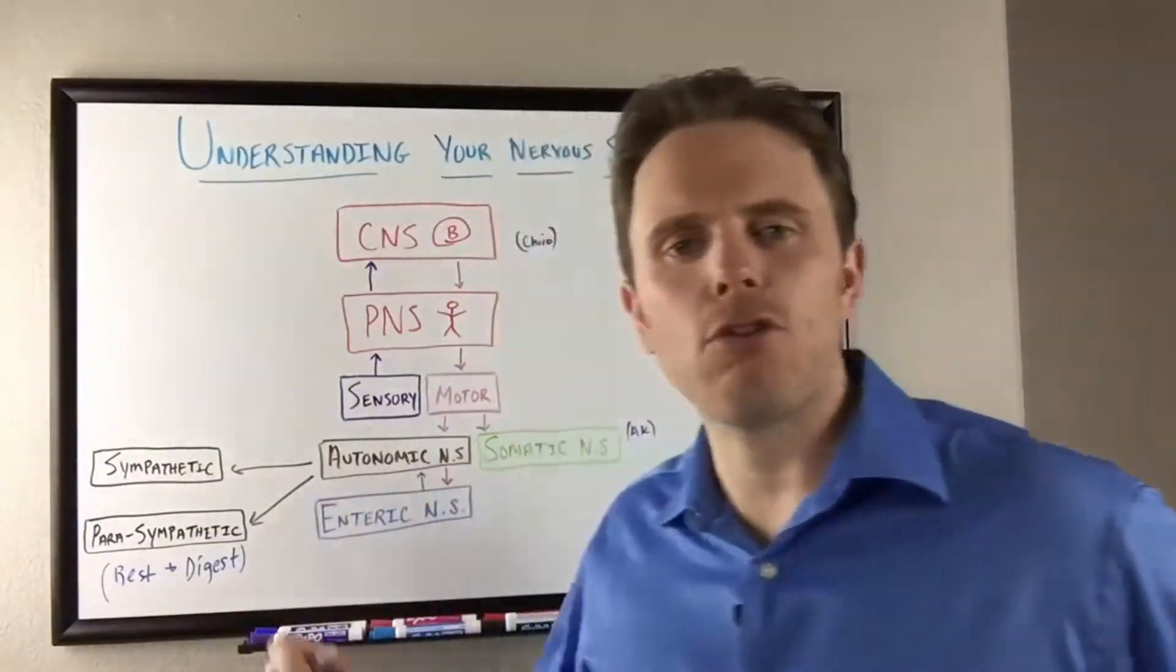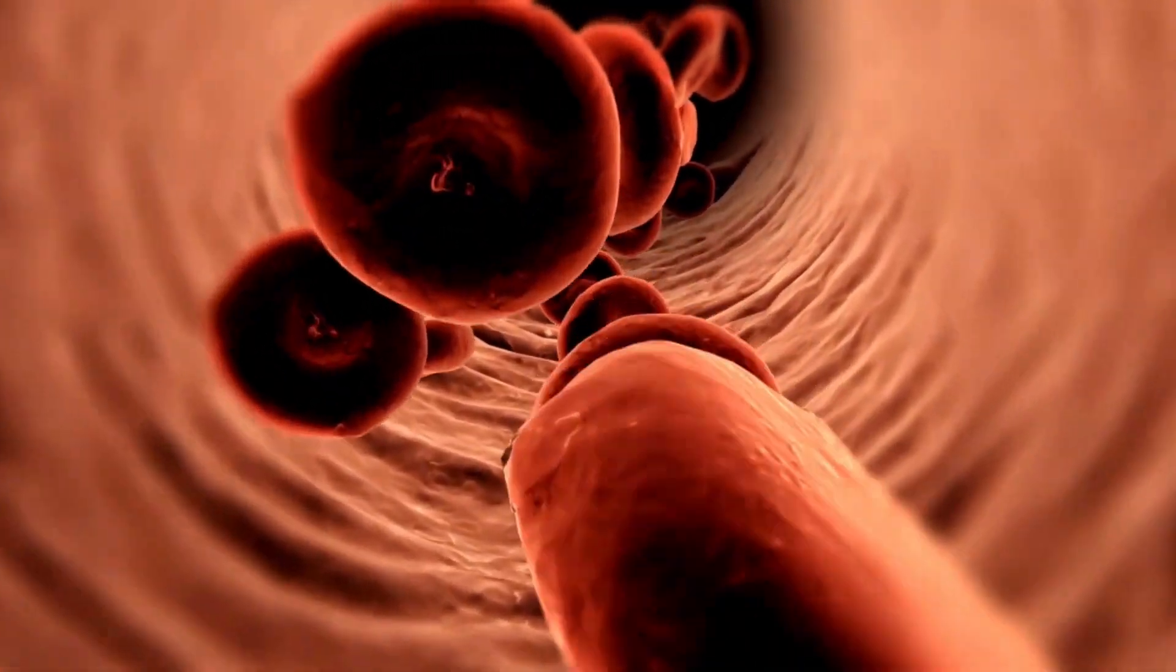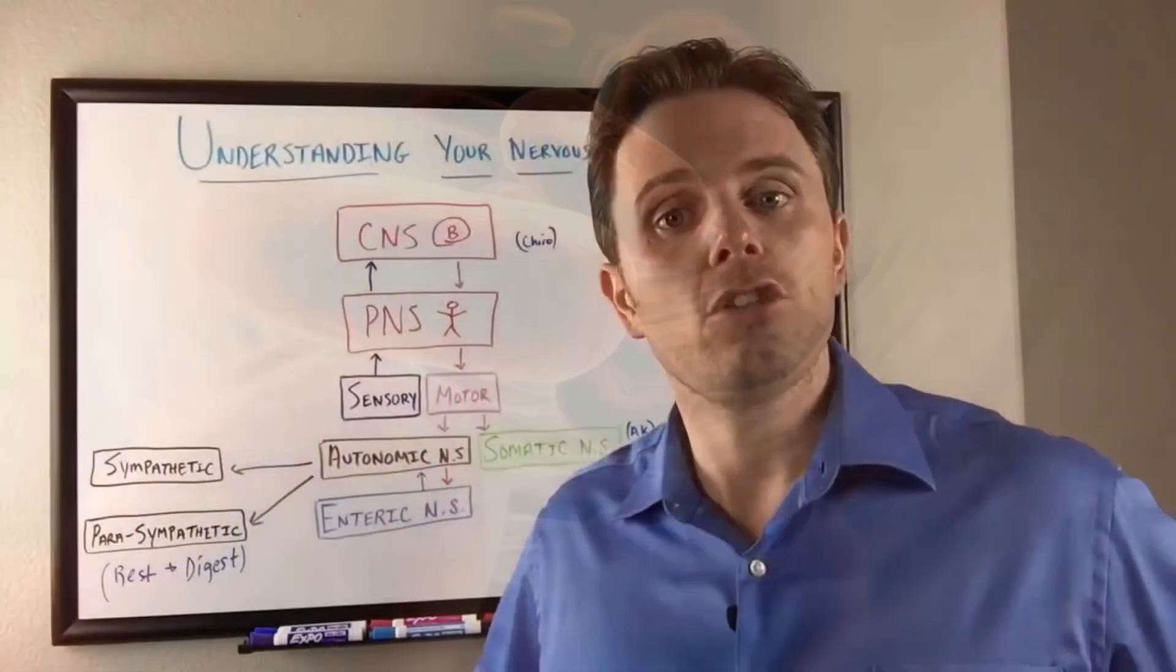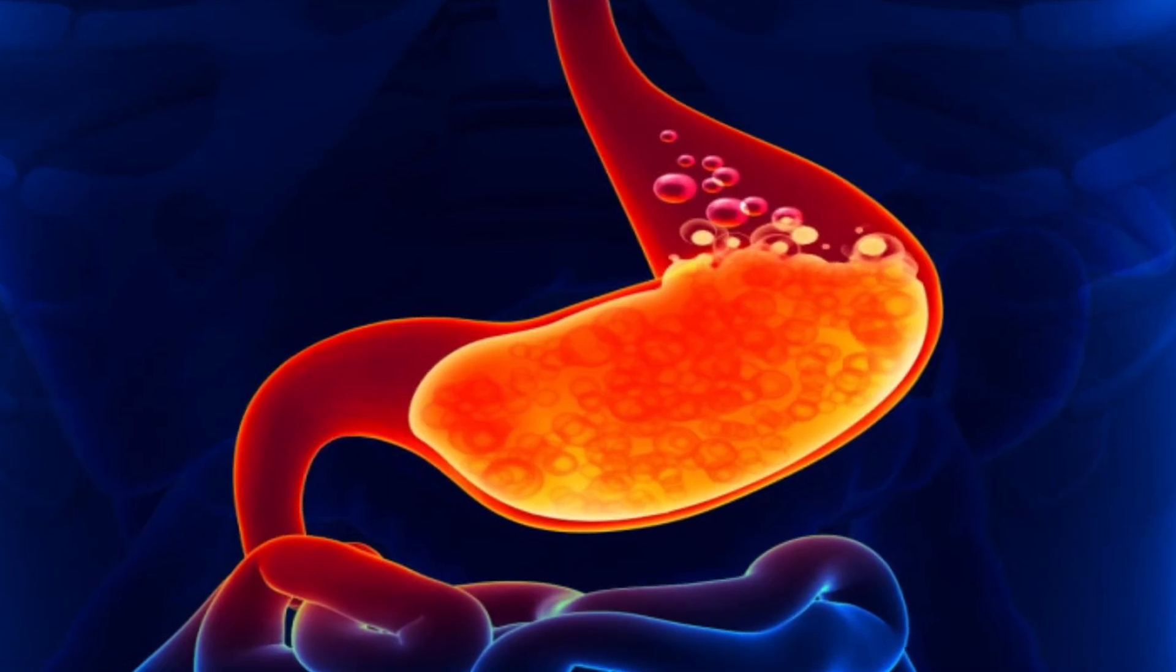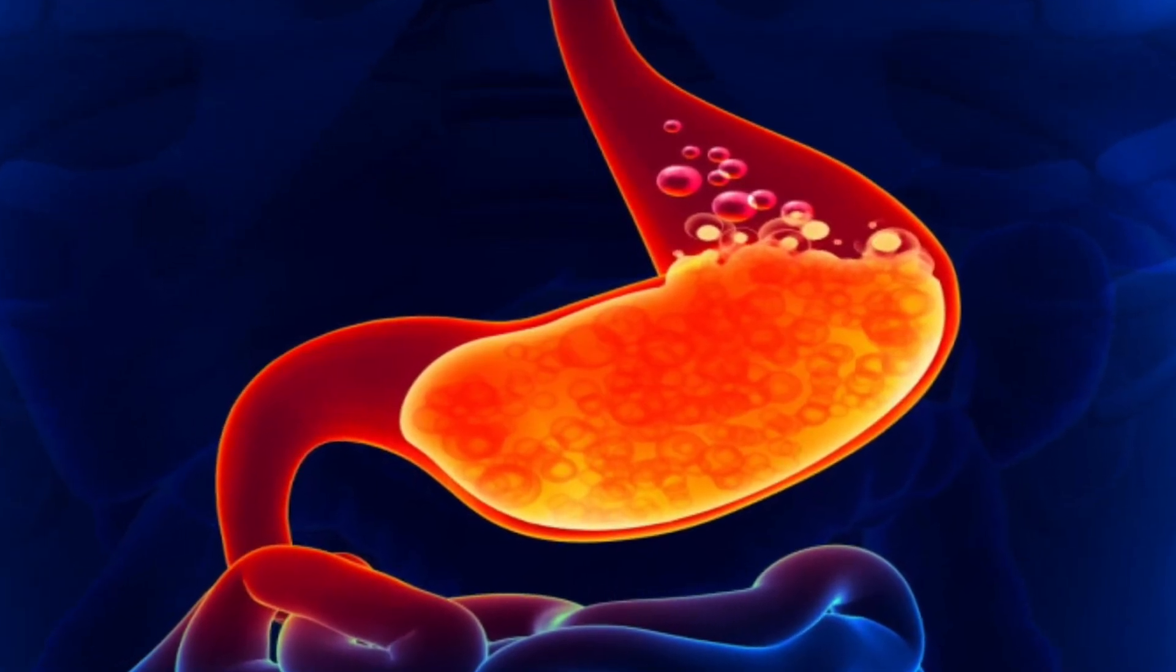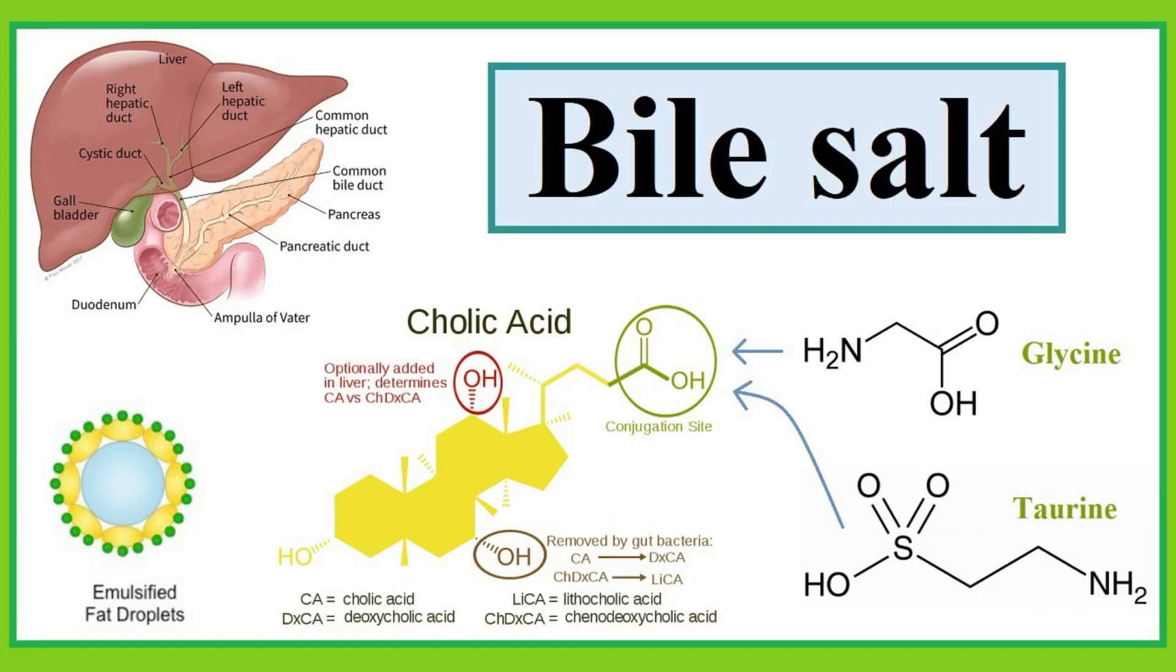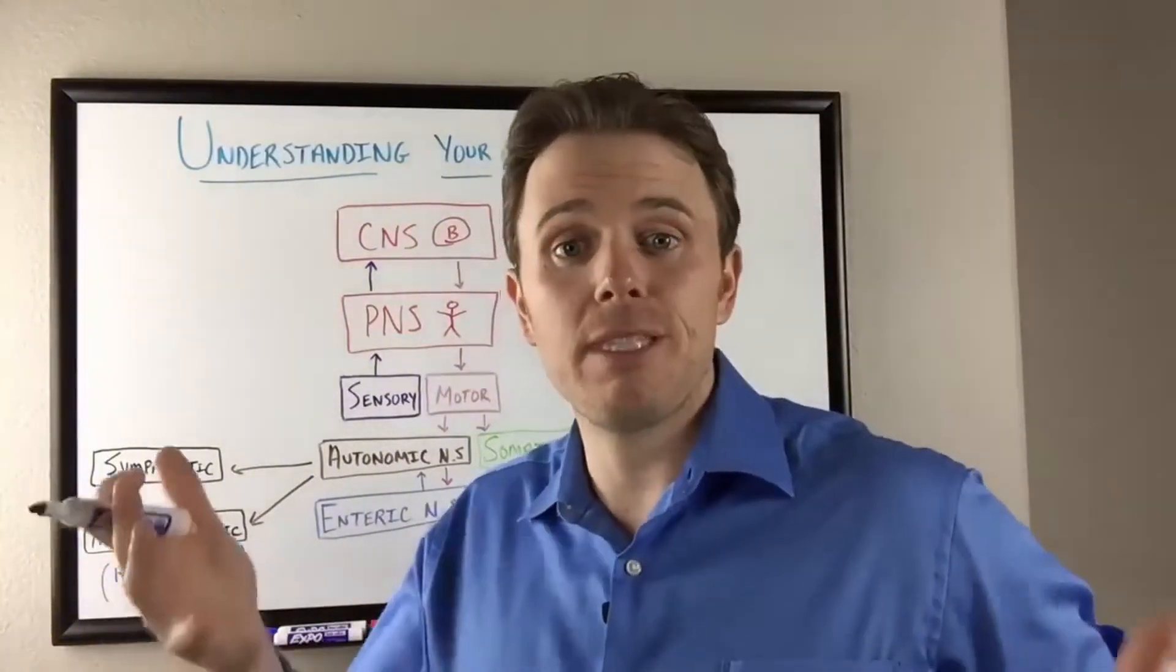Also parasympathetic drives blood flow inward. People that tend to have digestive issues tend to be more sympathetic, so their blood flows outwards. We need the blood to be inward to create gastric secretions, to create hydrochloric acid, which activates our enzyme systems to break down protein, which stimulates bile salts to break down fats. You can see this wonderful cascade that happens when we have good sympathetic to parasympathetic balance.